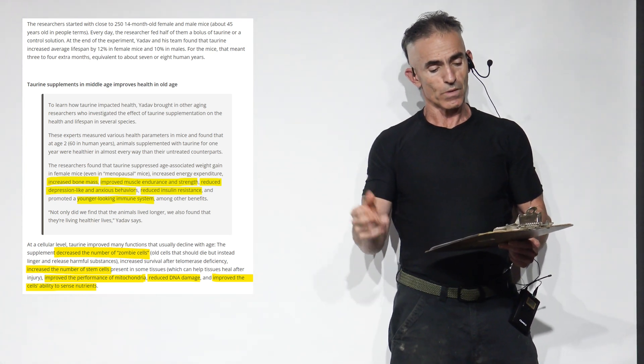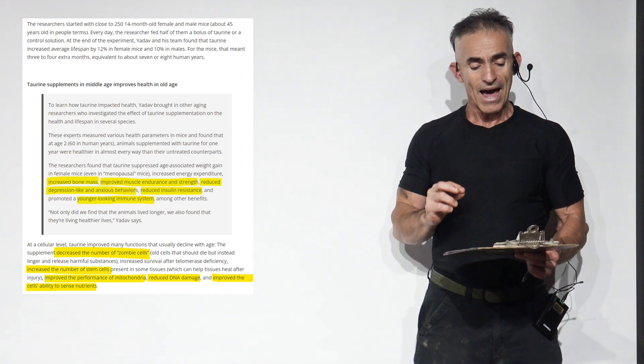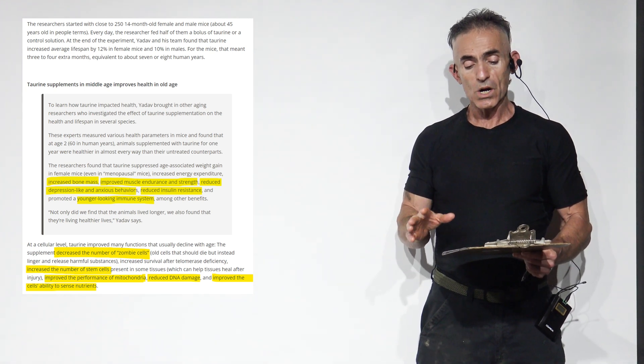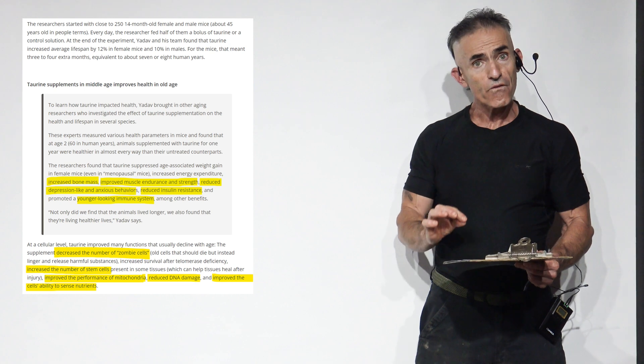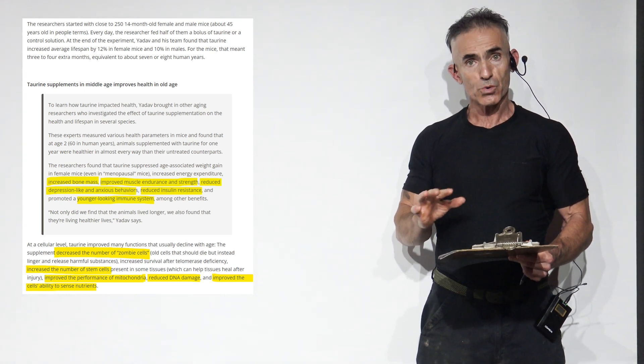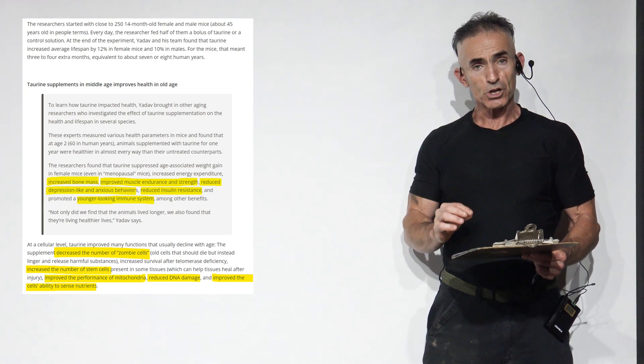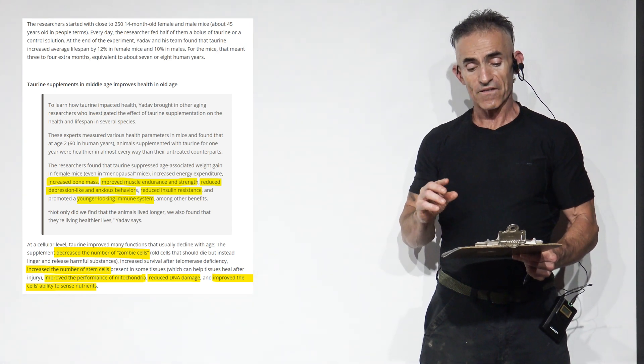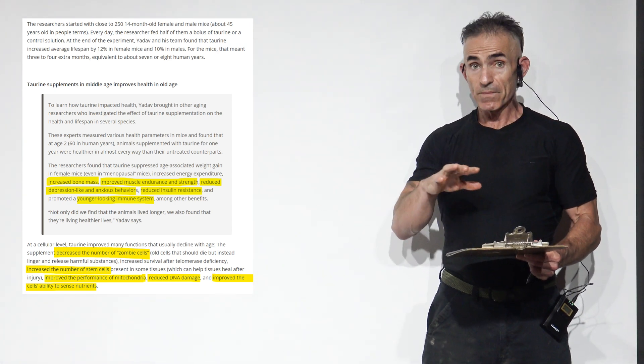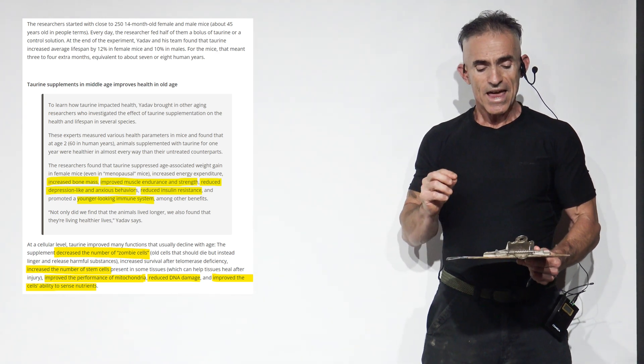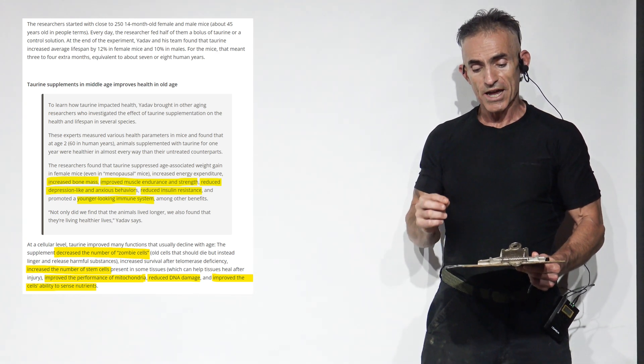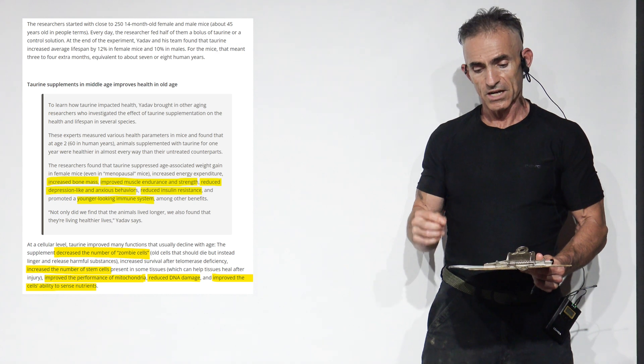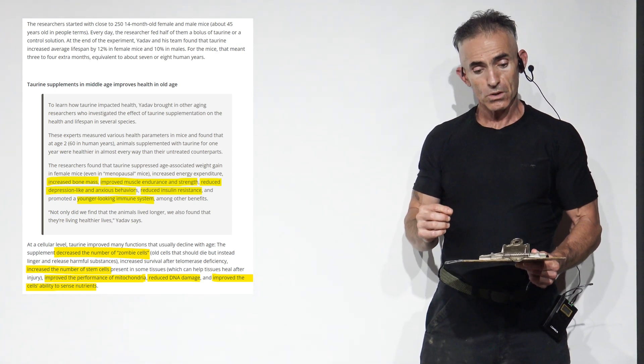They found that at age 2, equivalent to 16 human years, animals supplemented with taurine for one year were healthier in almost every way than their untreated counterparts. The researchers found that taurine suppressed age-associated weight gain in female mice, even menopausal mice, increased energy expenditure, increased bone mass, improved muscle endurance and strength.